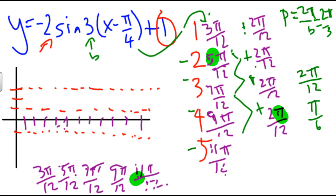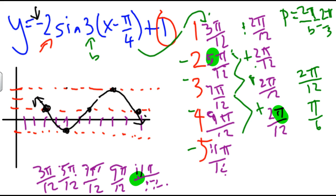Now I've got to fill in the actual points using the pattern for sine. Sine starts on the center line, so the first point is at 3 pi over 12 on the center line. My next point for sine is usually the top of the wave, but because of the negative here, the graph reflects over the x-axis and goes down to the bottom amplitude line instead. At 7 pi over 12, it goes back to the center line. At 9 pi over 12, it goes up to the top amplitude line. And then at 11 pi over 12, it returns to the center line. Connecting these with a smooth curve gives me my sine graph.